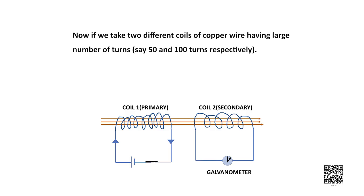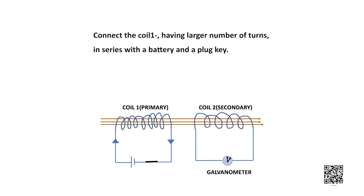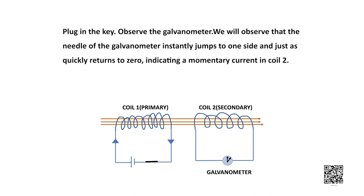Now if we take two different coils of copper wire having large number of turns, maybe 50 and 100 turns respectively, connect coil one having large number of turns in series with a battery and a plug and key, and connect the other coil, coil two, with a galvanometer as you can see on your screen. Plug in the key and observe the galvanometer. We will observe that the needle of the galvanometer instantly jumps to one side and just as quickly returns to zero, indicating a momentary current in coil two.